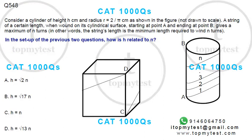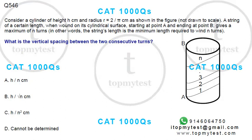Hi, there's a triple question on geometry - three questions back-to-back that came in CAT previously. Let's see what this says, not difficult. Consider a cylinder of height h and radius equal to 2/π centimeters as shown in the figure, not drawn to scale. A string of certain length when wound on the cylindrical surface starting at point A and ending at point B gives a maximum of n turns. In other words, the string's length is the minimum required to wind n turns. So you have three questions based on this.